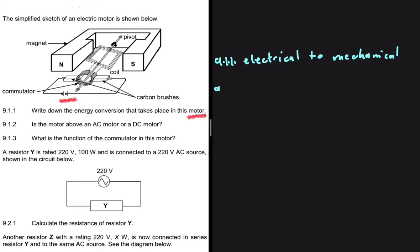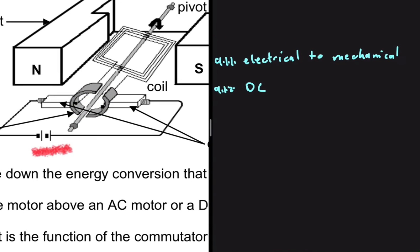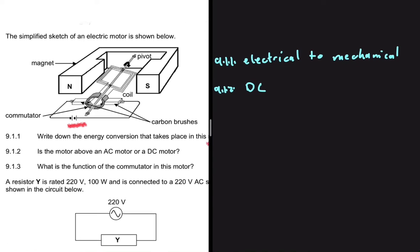Let's look at question 9.1.2: is the motor above an AC motor or a DC motor? It is a DC motor. Why? Because of the presence of commutators, or what we call split rings — that's what tells us it is a DC motor. If we had slip rings then it would be an AC motor. You can literally see that we have a ring that is split in half, whereas in AC motors we have slip rings.